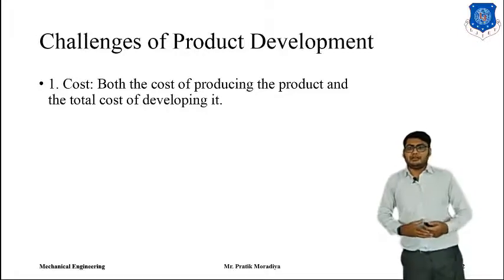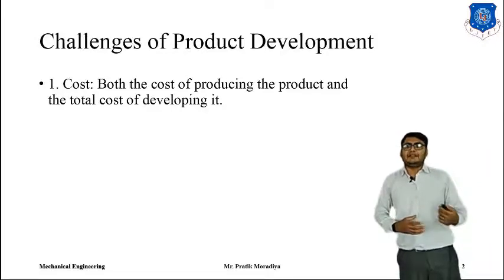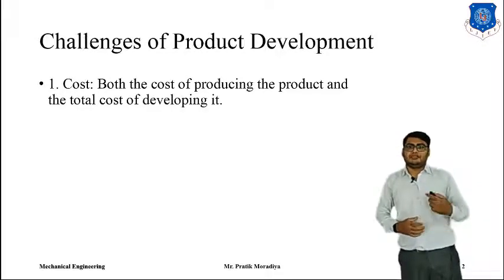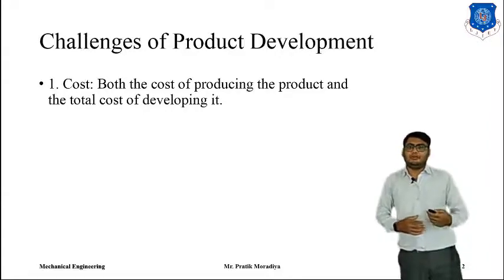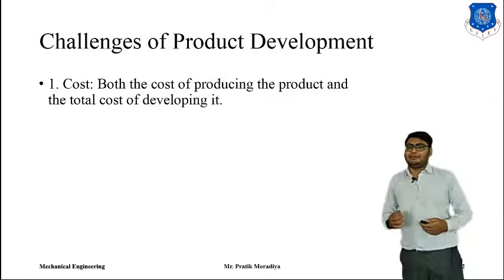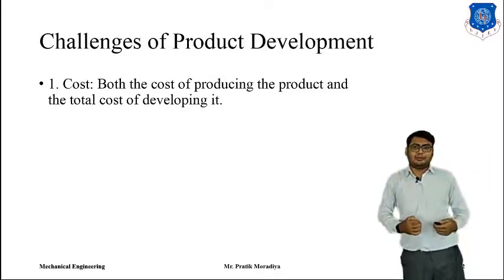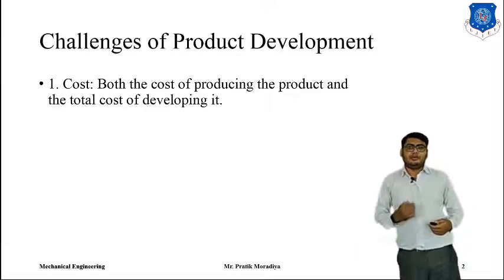If you develop the same product using machining processes, development cost is relatively less. But when you manufacture a single product using machining, the cost is very high compared to casting, because in casting you have to manufacture dies and patterns first. However, when mass producing, the same die developed for your prototype will be used for thousands of products, so the cost of production is reduced.